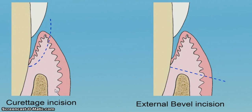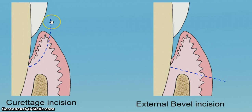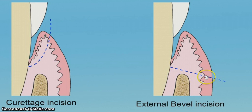In this video I'm going to demonstrate how to put an internal bevel incision. But before that, let us discuss the basic incisions used in surgical periodontal therapy. This incision is called the curettage incision, used in the curettage procedure aimed at removal of the pocket lining. This incision is called the external bevel incision, used in the gingivectomy procedure.